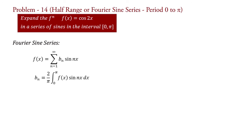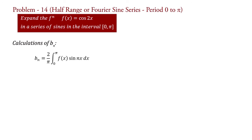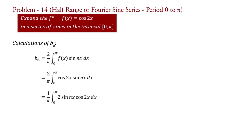We will calculate b_n for the given function and then put its value in this equation. b_n = (2/π) integral from 0 to pi of f(x) sin(nx) dx, where f(x) = cos 2x. Therefore, b_n = (2/π) integral from 0 to pi of cos(2x) sin(nx) dx. We can write it as b_n = (1/π) integral from 0 to pi of 2 sin(nx) cos(2x) dx.